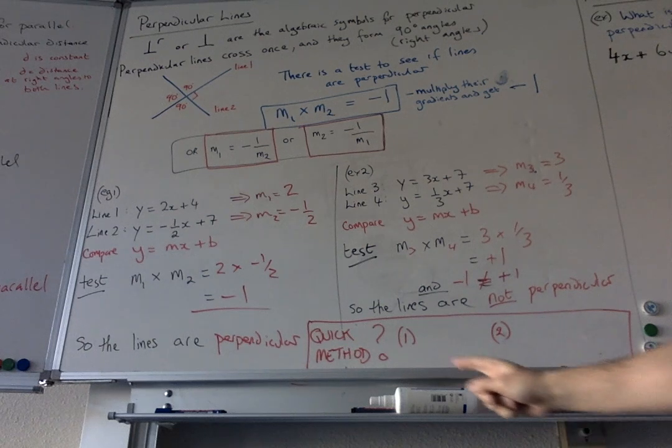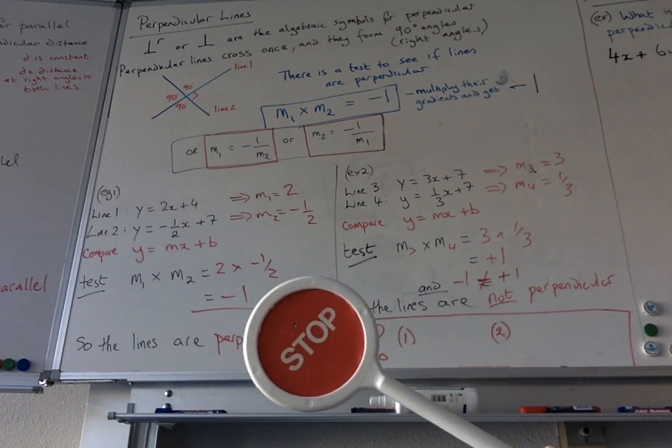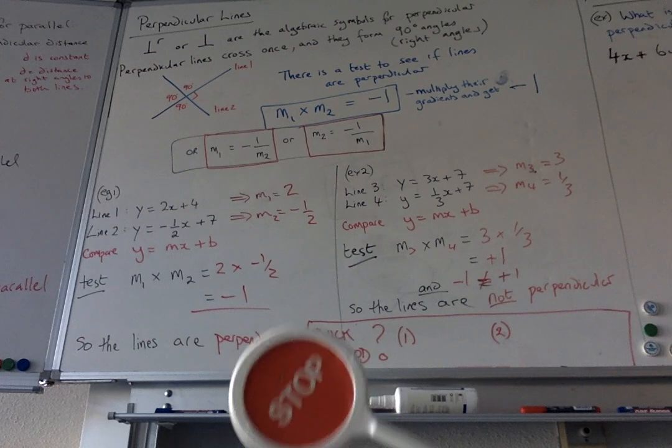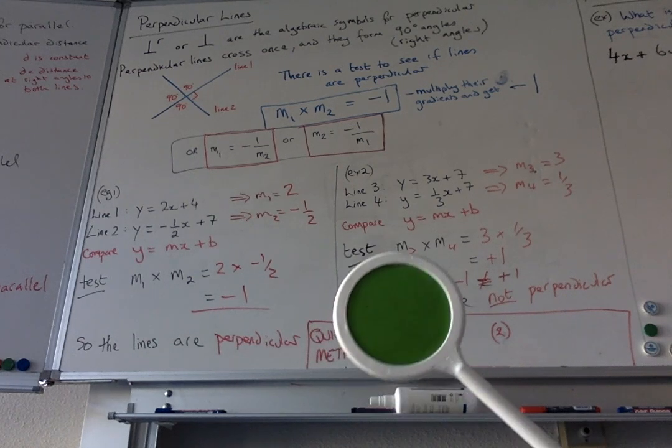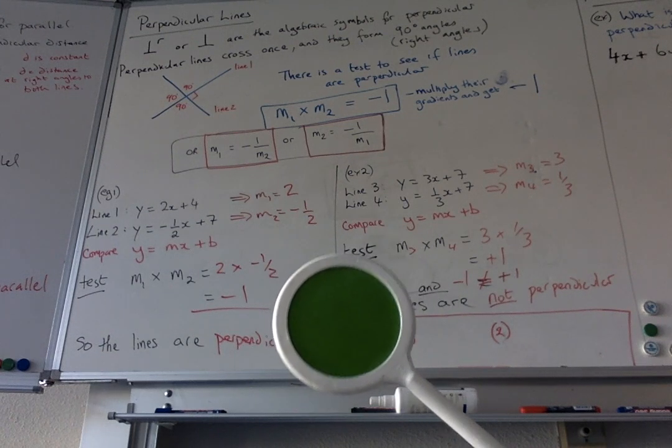But there's a quick little method. So if I told you that I had something, a gradient that was 3 sevenths, can you instantly, without doing all this work, tell me what the perpendicular gradient would be? If I have a gradient of 3 sevenths, what is perpendicular to that? Okay, so 3 sevenths. I'm going to tell you the perpendicular is minus 7 over 3.